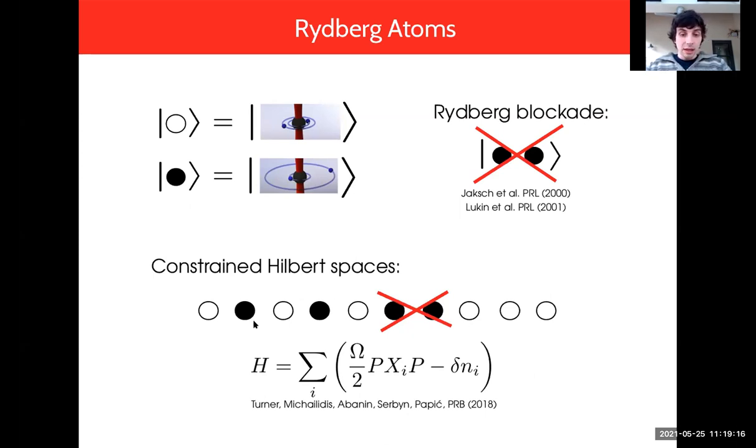This can give rise to quite a lot of interesting physics which has already been explored in detail in one dimension recently. For example, here I'm showing a one-dimensional array of Rydberg atoms. We see two Rydberg atoms close to each other that are both excited, and by the Rydberg blockade we can essentially forbid such states.